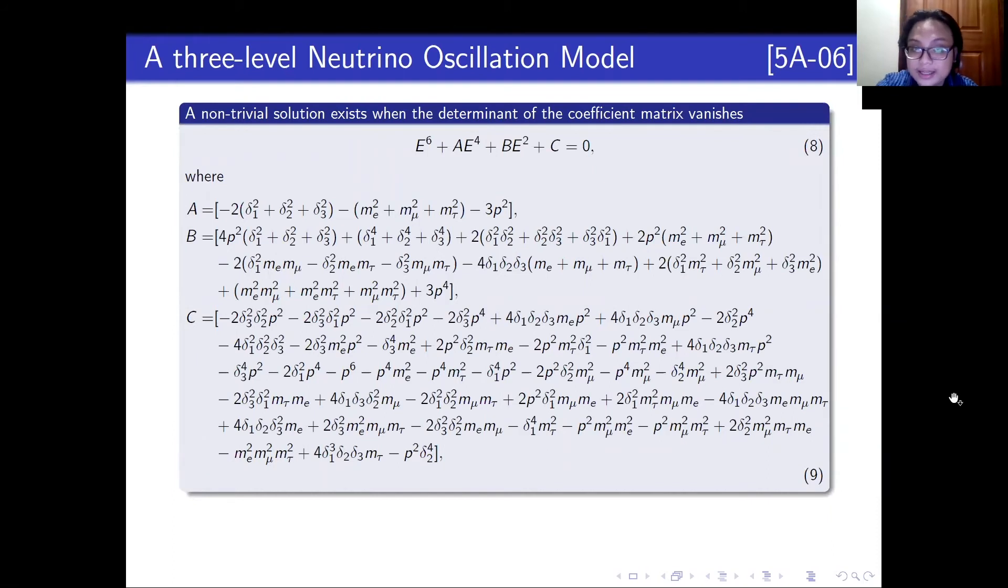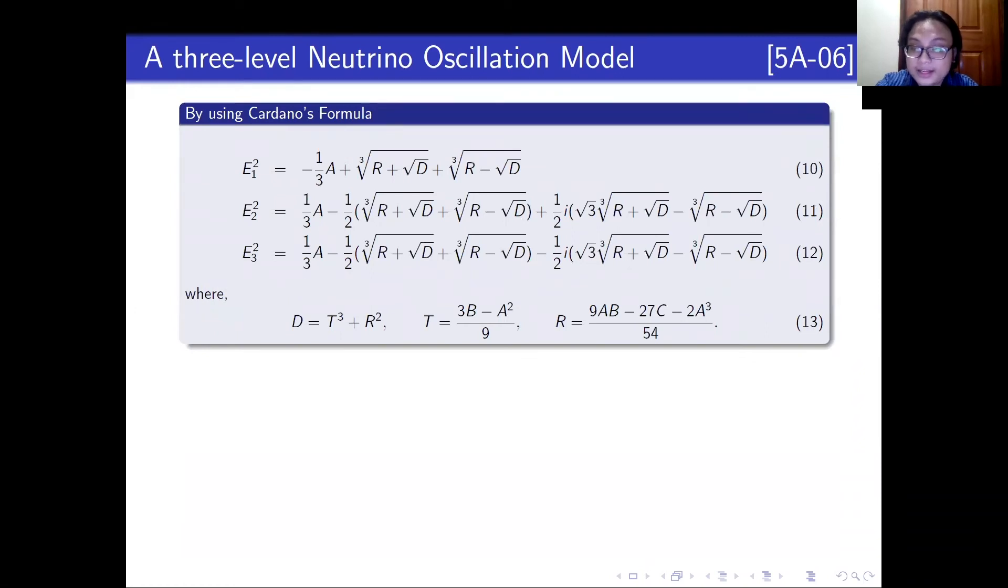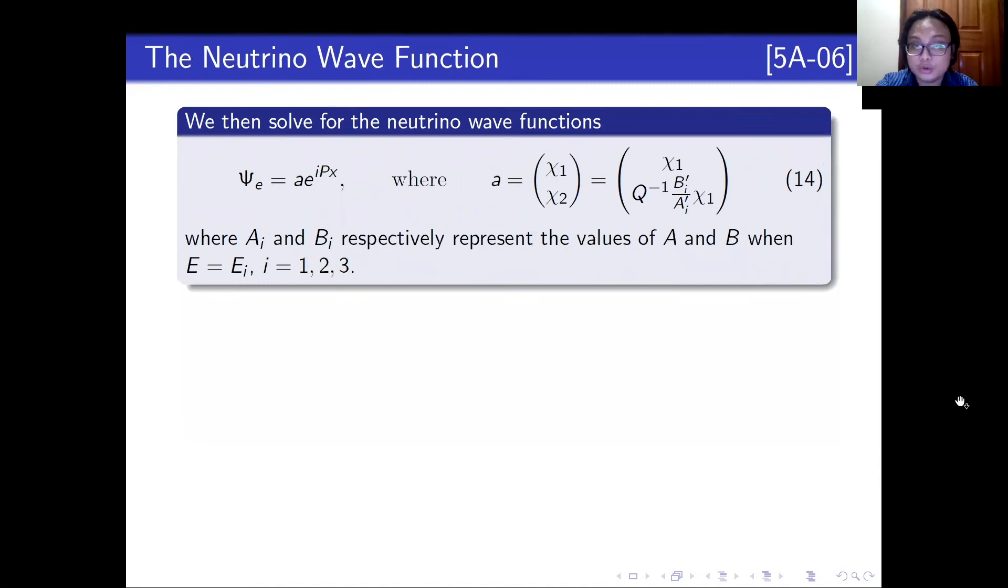A non-trivial solution only exists when the determinant of the coefficient matrix vanishes or equals to zero, which will lead us to equation 8. We notice that equation 8 can be reduced to a cubic equation, and by using Cardano's formula, we can get the energy eigenvalues of the system.